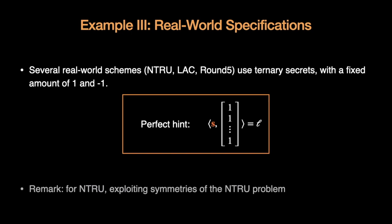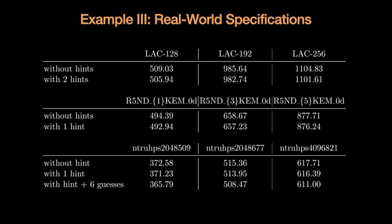Another application was quite surprising. Some hints exist by design. Several real-world schemes like End True, Lack or Round 5 use fixed-weight ternary secrets. This naturally induces a perfect hint. The integration of these structural hints slightly benefits an attacker. We can see that the block size decreases by 1, 2 or 3. The lattice reduction work is still very high though. Let me finish this presentation by demonstrating our tool in its full-fledged version.